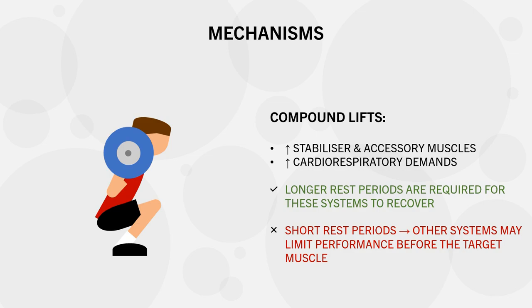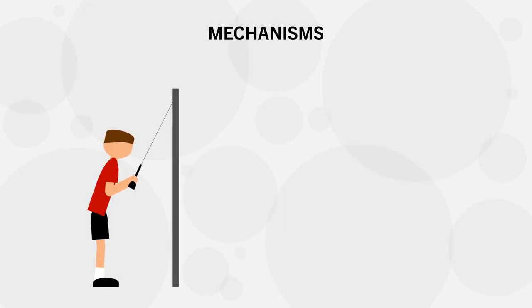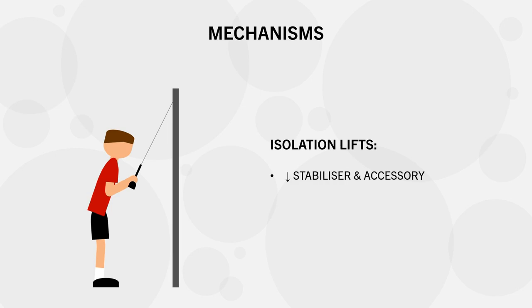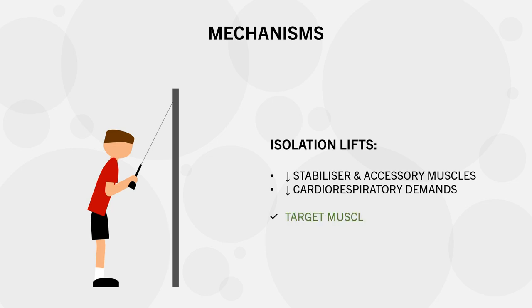On the other hand, most isolation lifts like bicep curls, calf raises, or lateral raises have very few accessory muscles involved and very little cardiorespiratory demands. This means that no matter how short our rest periods are, the target muscle is almost always going to be the limiting factor of each set, assuming our technique is strict and effective. So we can get away with shorter rest periods and still train the muscle to its maximal capacity.